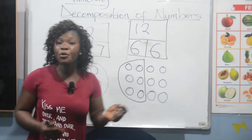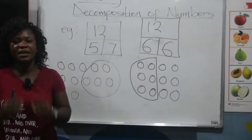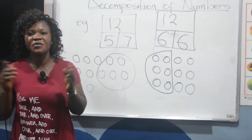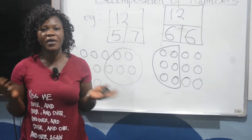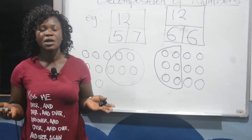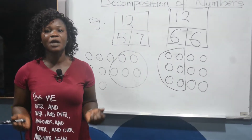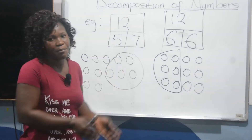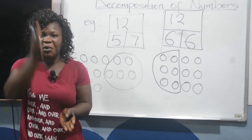I hope you at home will also do it in a different way — separate it differently and you may get different numbers. Which simply means we have decomposed this number, separating it into two. Yes, we are using our counters. Another example using counters to decompose.